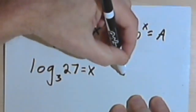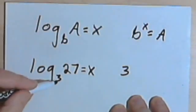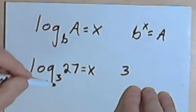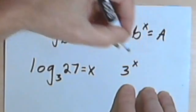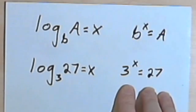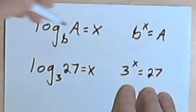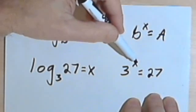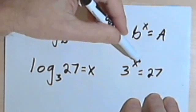So I'll write that as 3, which was my base of my logarithm, so it's going to be the base of my exponent. 3 raised to the x power equals 27. And now all I have to do is ask myself, what power do I have to raise 3 to in order to get 27?